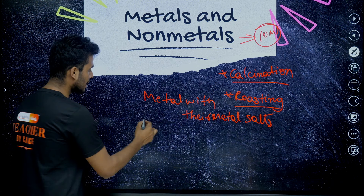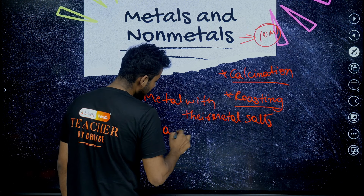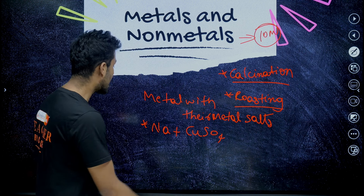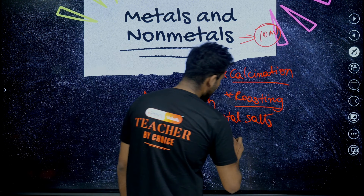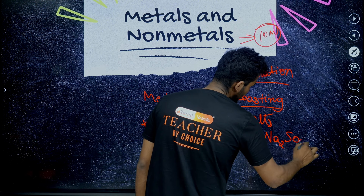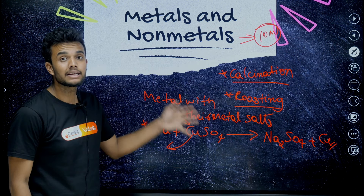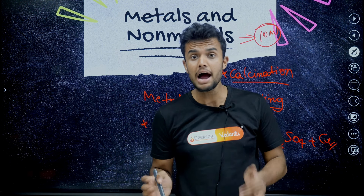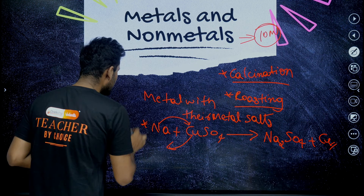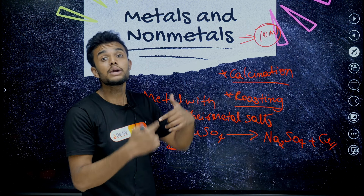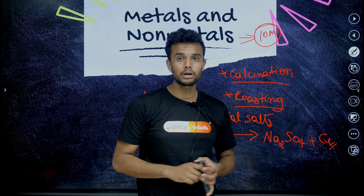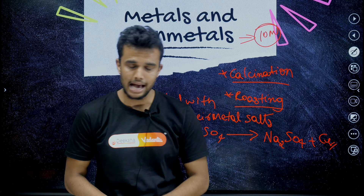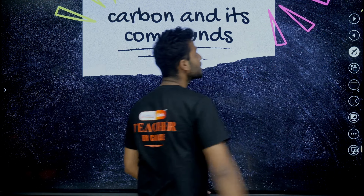Also very important: metal with metal salts — displacement reaction. For example, sodium is reacted with copper sulfate. Displacement happens — sodium replaces copper from copper sulfate and yields sodium sulfate (Na2SO4) plus copper, because sodium is more reactive than copper. This reaction is also linked with unit one on displacement reactions, making it very very important.